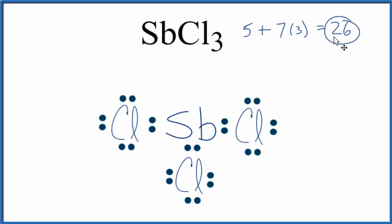So at this point, we've used 24 valence electrons. We have 26. We're going to put that last pair of electrons there on the antimony in the center of our Lewis structure. So this is the Lewis structure for SbCl3.